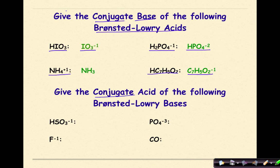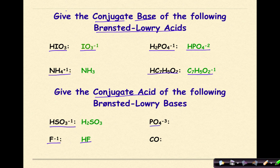Give the conjugate acid of the following Bronsted-Lowry bases. Each base gains a hydrogen to become an acid. HSO₃⁻ gains a hydrogen and becomes H₂SO₃. F⁻ gains a hydrogen and becomes HF. PO₄³⁻ gains a hydrogen and becomes HPO₄²⁻. And CO gains a hydrogen and becomes HCO⁺.